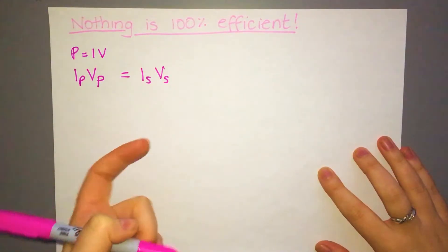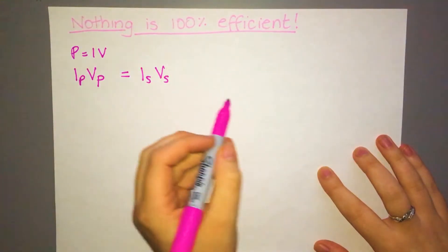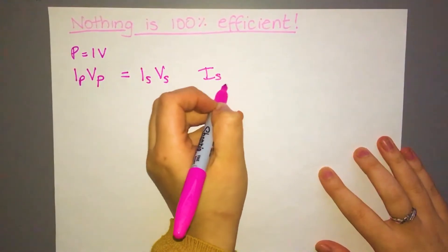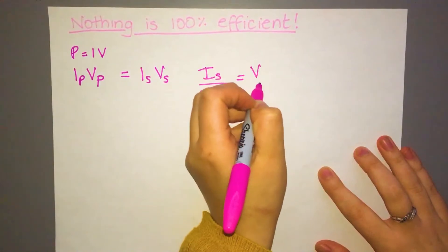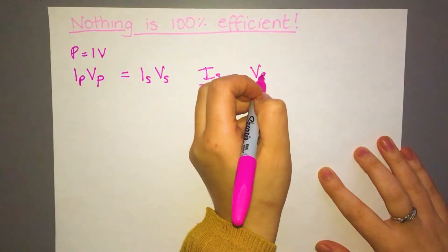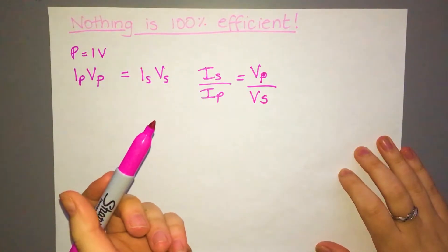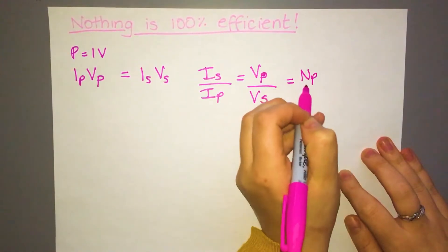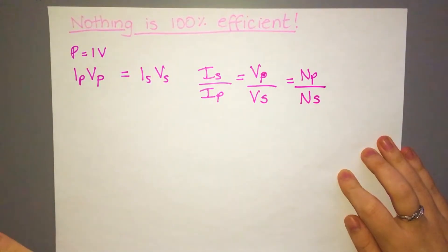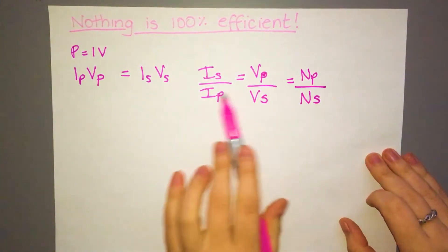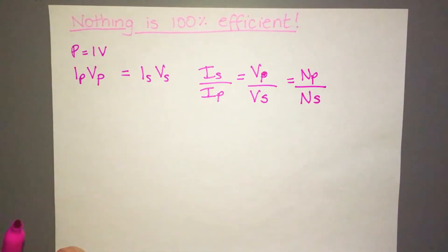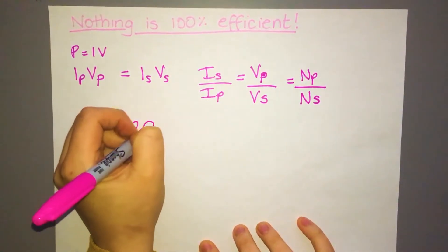If that was the case then what we could also do is rearrange this equation. Now if you think back to the equation we knew before as well, that means we can also write this equation like this. So this is something that's always worth being aware of, that you can equate these three to each other so you can link it to the power. Now because of this, this obviously is if we're considering it to be 100% efficient, this would be in an ideal transformer.